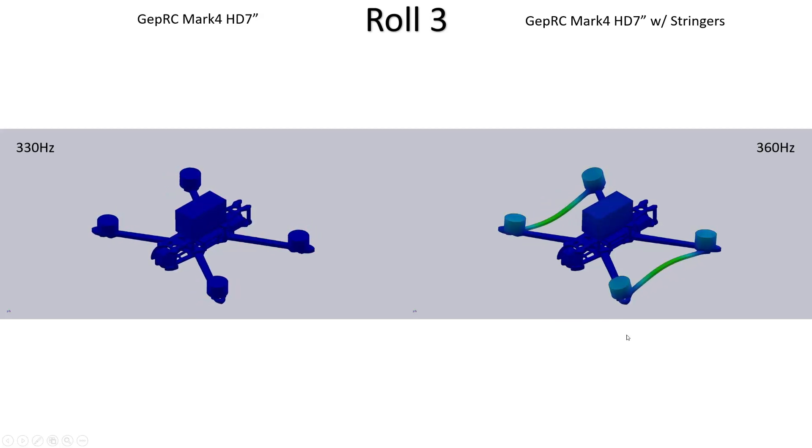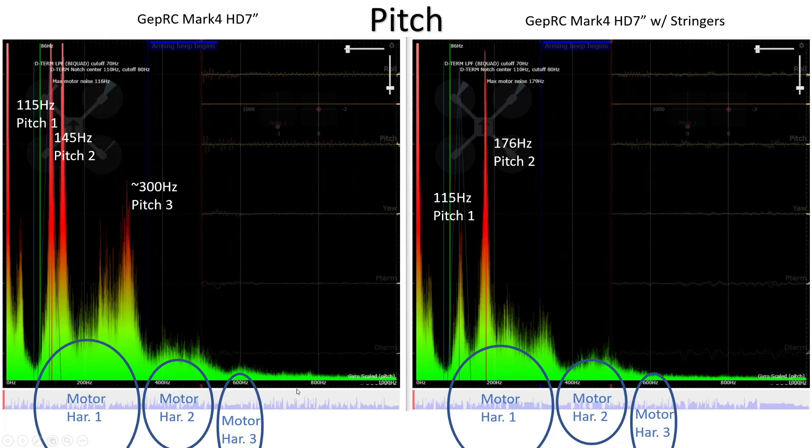If we look now at the spectrograph for the pitch axis we can see here on the left before the stringers we had several resonant modes, one at 115 hertz, one at 145 hertz and another one at about 300 hertz. We can see after the stringers have been fitted that we still have a peak at 115 hertz although it's much smaller and the second peak has been shifted in frequency from 145 hertz up to 176 hertz so another big benefit there. When we look up at the 300 hertz peak we can't even really see that anymore. It's been really heavily attenuated, shifted in frequency perhaps, made a lot smaller by the addition of those stringers. So let's go and look at the mode shapes and see if we can figure out exactly why that happened.